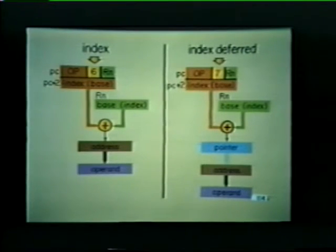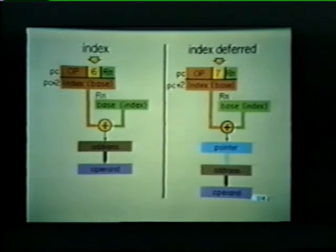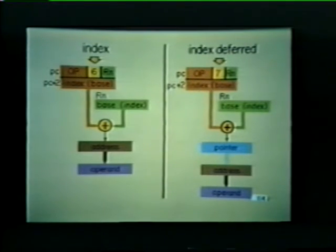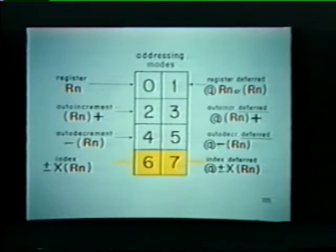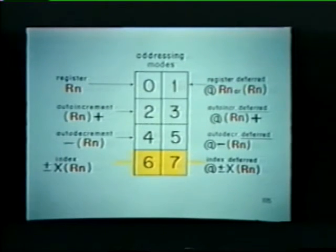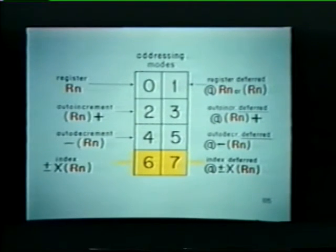Index and index deferred were the last two addressing modes we discussed. Both of these modes sum a base address with an index word. If the index mode is chosen, this produces the address of our operand. Index deferred, on the other hand, produces a pointer to the address, which in turn directs the processor to the actual operand. We must use this notation whenever calling for the index or index deferred mode. The letter X represents an index word or base address that is summed with the contents of register R sub N, and the value represented by X can be either positive or negative.